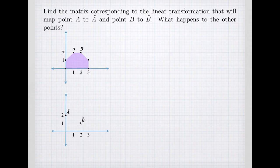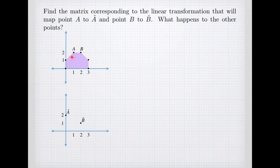This example will show us how to find the matrix of a linear transformation, and we're going to do it with a graphical illustration. I have a little figure here — a little house shape — and we are going to calculate a transformation that sends point A to another location and point B to another location. We'll figure out what linear transformation does that, and then determine what happens to the other four points on the entire figure.